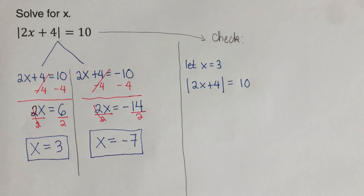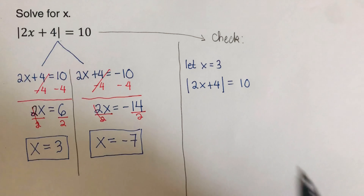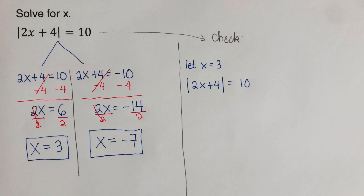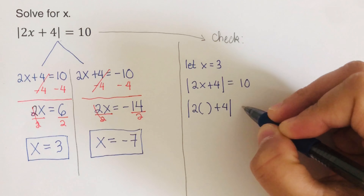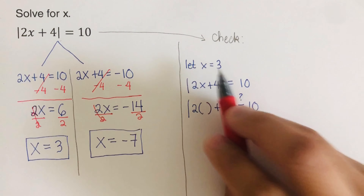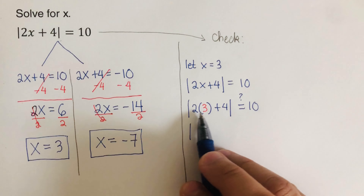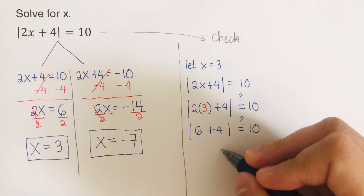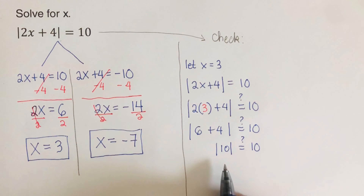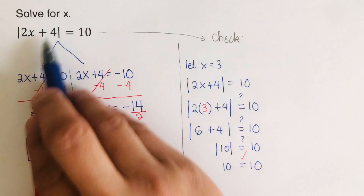A helpful trick: change the variable into parentheses before plugging in values — this avoids confusion with the math. So we write |2( ) + 4| = 10, then plug in 3: |2(3) + 4| = |6 + 4| = |10| = 10. Since absolute value always gives the positive value, 10 = 10. So x = 3 is confirmed as a solution.